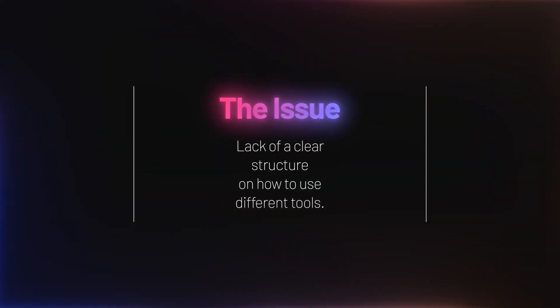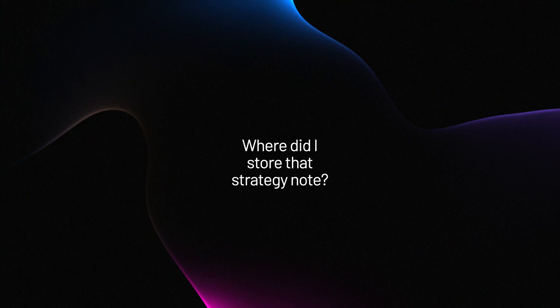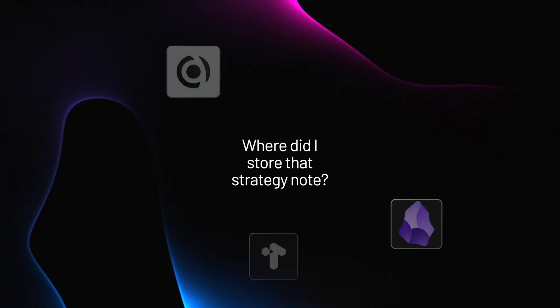Let's talk about the real problem here: too many tools and too little clarity. The problem isn't that Obsidian doesn't work for Mike — it clearly does. The real issue is the lack of a clear structure for how he uses different tools. Mike isn't struggling because his system is broken. He's struggling because his business knowledge is scattered across multiple apps, making it hard to know where to put new information and where to find old notes when he needs them. This is the danger of tool hopping. Instead of improving productivity, it often creates more mental friction. Every time Mike needs to retrieve something, he has to ask himself: where did I store that strategy note? Was that solution in Obsidian, or did I drop it into Capacities, Tana, or another tool? The result? Wasted time, unnecessary frustration, and no real sense of control over his system.